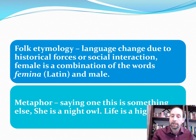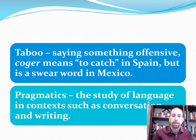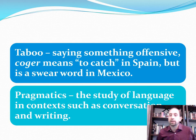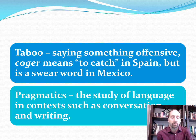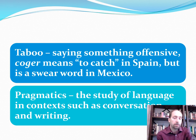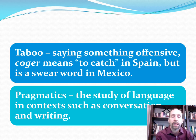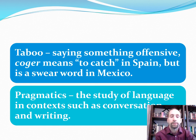A taboo is an offensive term. An example from language: in Spain, we use the word 'coger' to mean 'to catch' — 'voy a coger el autobús' means 'I'm going to catch the bus' — but in Mexico that is a swear word, so you'd want to use a different word.